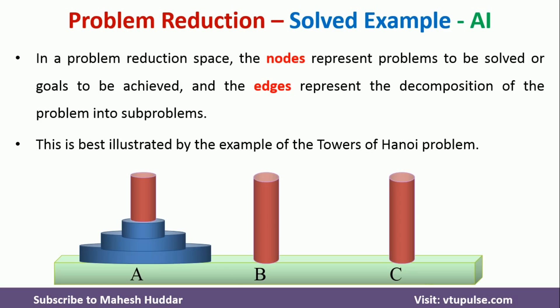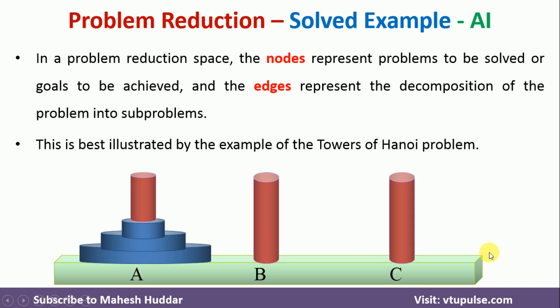This is how the Towers of Hanoi problem looks like. We have three towers — A, B, and C — and there are three tiles. We want to move these particular tiles or blocks from A to C. The constraint is that the smaller block will sit on top of the larger block, and we need to transfer these blocks from A to C.